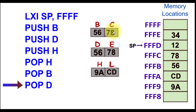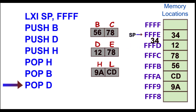If you want the original data to be restored you must pop in the correct reverse order: POP H, POP D, then POP B. With the next instruction POP D, the stack pointer is at FFFD — data 12 goes into register D, the stack pointer increments, data 34 goes into register E, and the stack pointer increments again back to its original position FFFF. That is how PUSH and POP work. Thanks for watching.